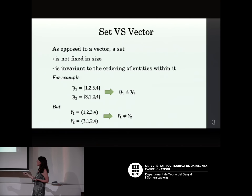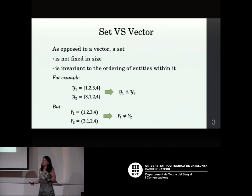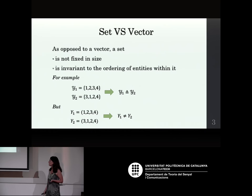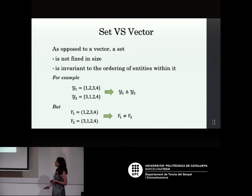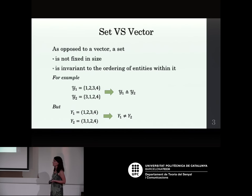If we use vectors instead, the vector [1, 2, 3, 4] is completely different from [3, 1, 2, 4]. This illustrates the problems of using neural networks with sets rather than vectors.